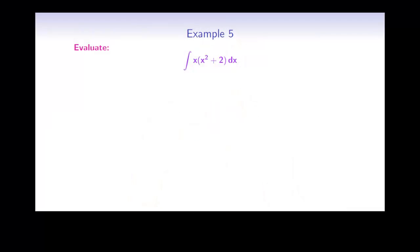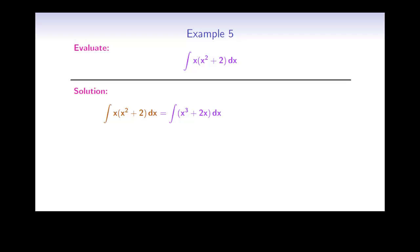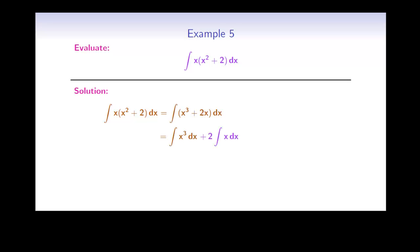Notice that there are no simple rules for anti-differentiating a product or a quotient, making them much more difficult to integrate. But in some simple cases, you can rewrite the expression and use the basic rules we've learned. Here is an example of an integral of a product. We cannot integrate by simply integrating each part and multiplying. Instead, we expand the brackets to get x cubed plus 2x. Now we divide it into two parts and use the power rule on each. The final answer is 1 over 4 x to the power of 4 plus x squared plus C.